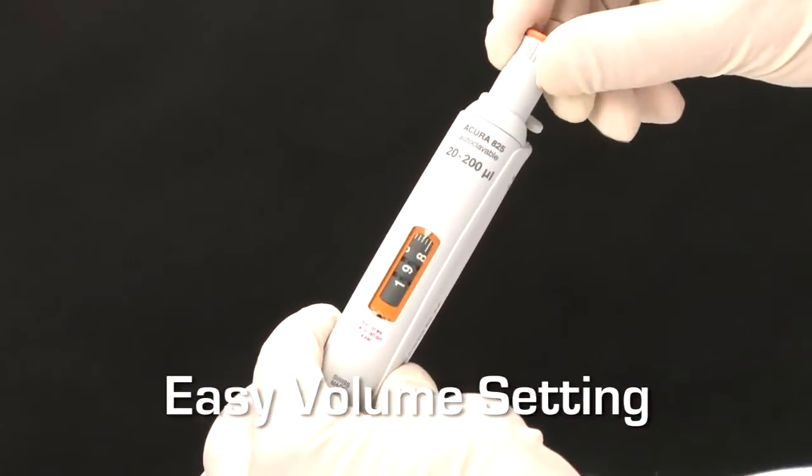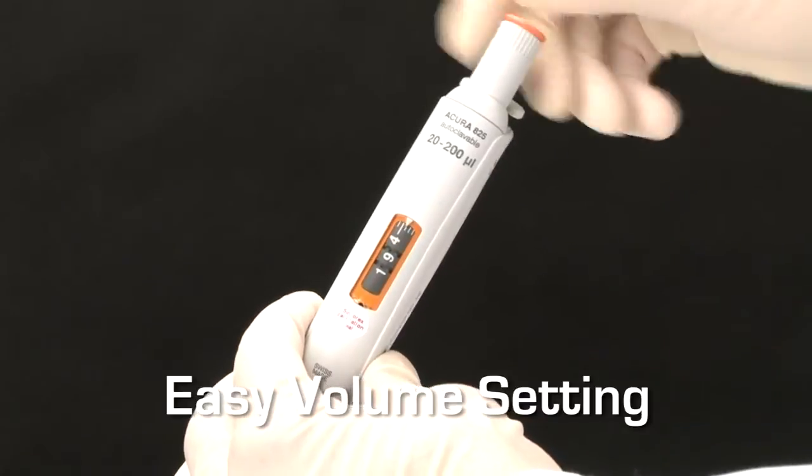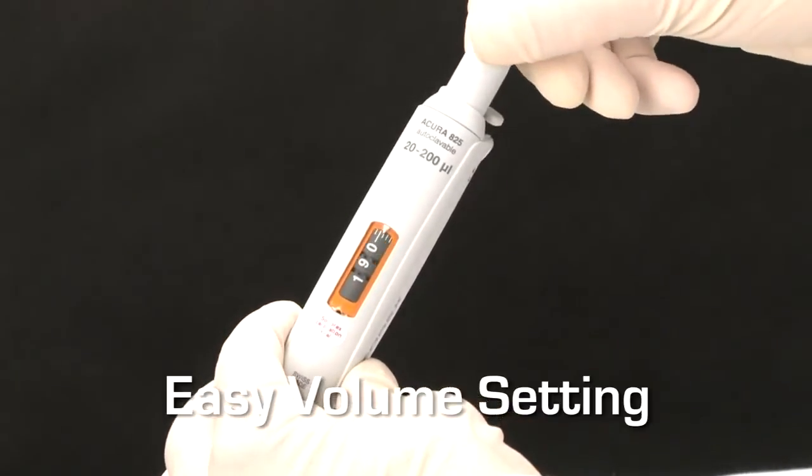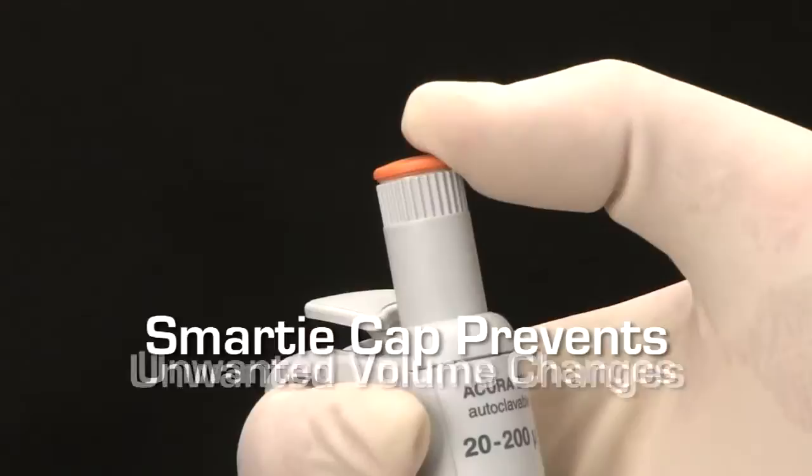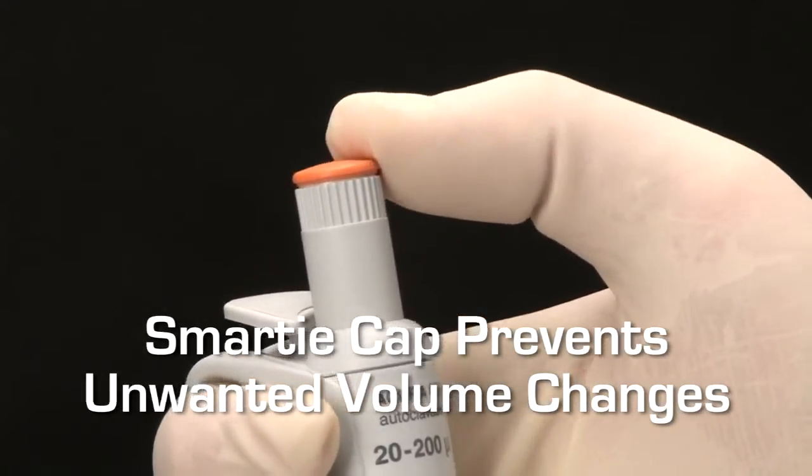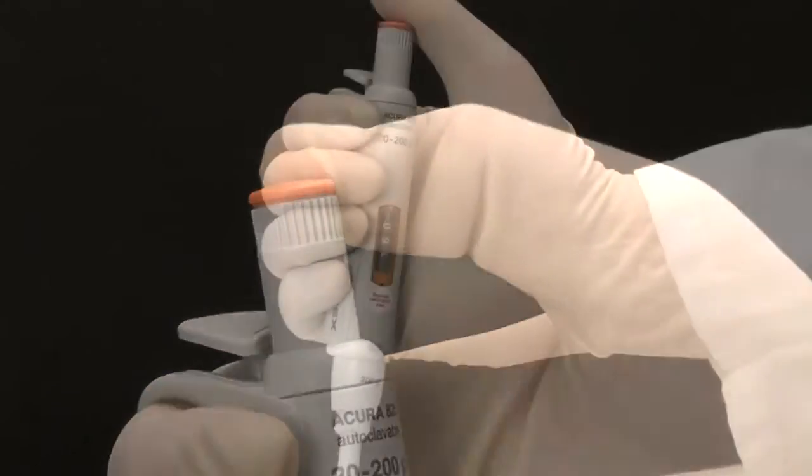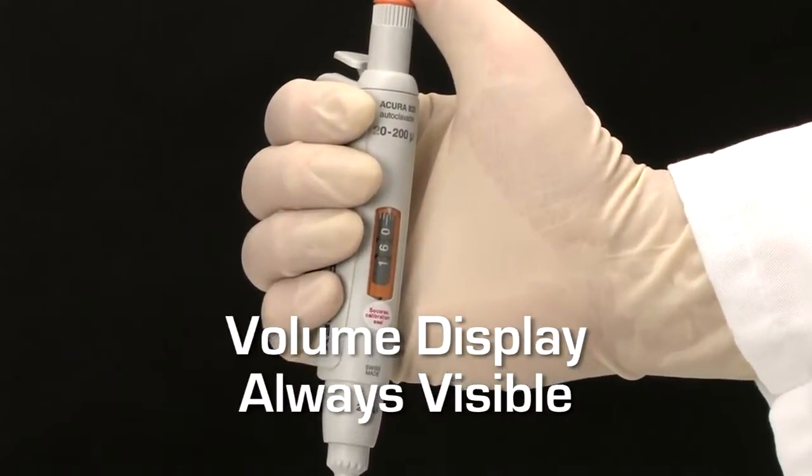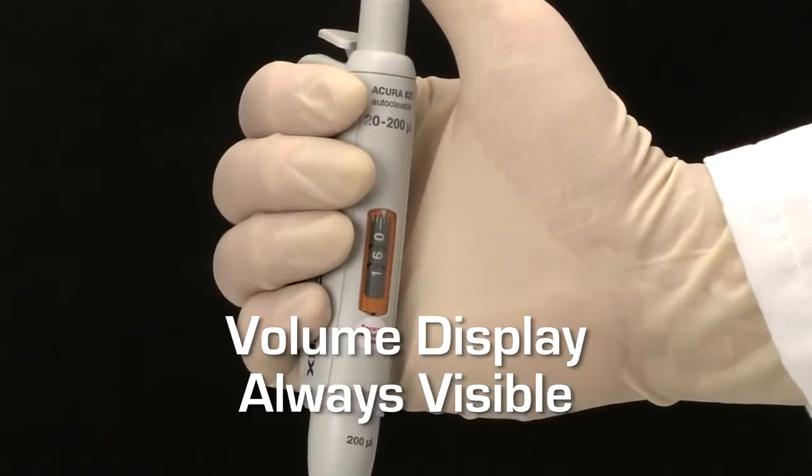Setting the exact volume to be dispensed with all Acura Manual Pipettes is simple and precise. Once selected, the free rotating color-coded cap prevents any unwanted volume changes from occurring during use. For positive verification, the contrasted volume display is visible anytime.